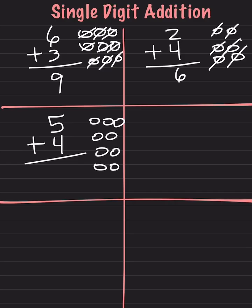Let's count together: 1, 2, 3, 4, 5, 6, 7, 8, 9. We can also do mental math. We can start at 5 and add 4. So we start at 5, and then we add 4: 6, 7, 8, 9.